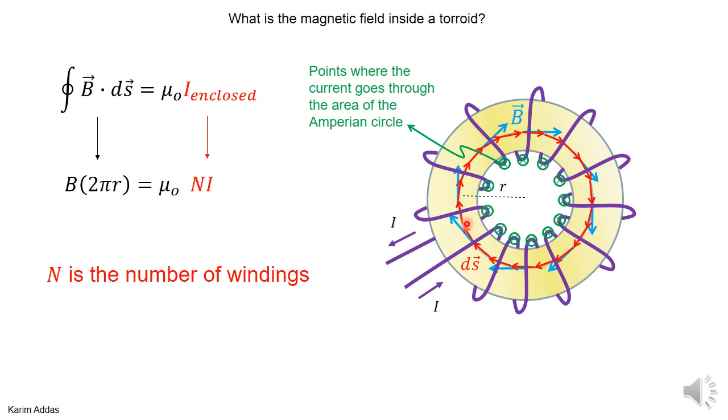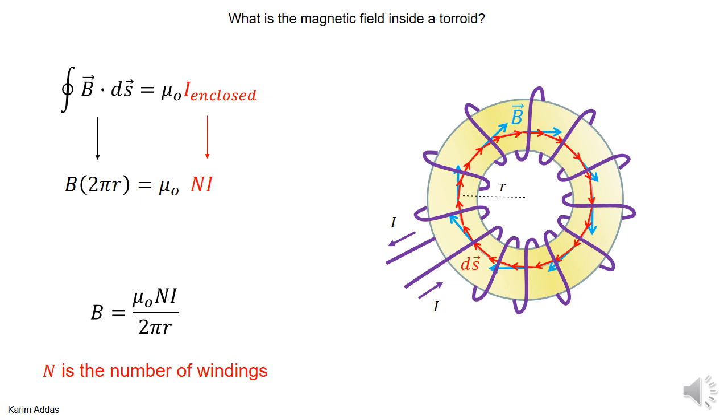And so you can see that every winding, every single winding contributes once to an amount of current going through the circle. It all goes in the same direction into the page. So if you want to get the total amount of current enclosed in this circle, it's the number of windings times the current of each winding. So if the current is I and the number of windings is N, then N times I gives you the total amount of current enclosed in this Amperian circle, Amperian loop.